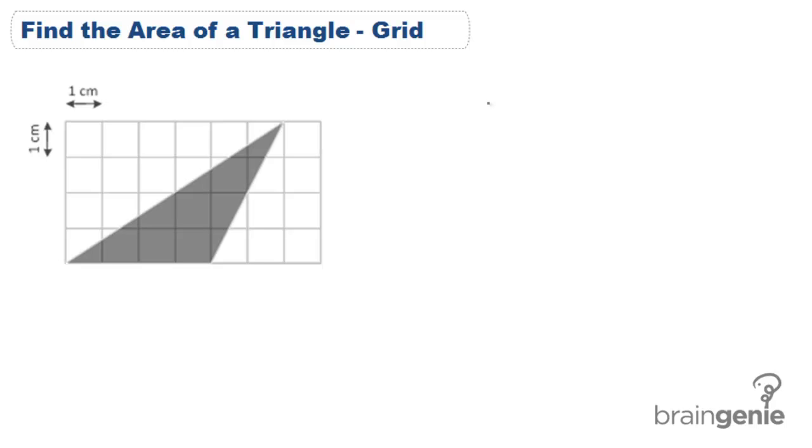Here we're given a grid and we need to find the area of our triangle. Let's first remember that area of a triangle is one half base times height. Because we're in a grid, it's relatively easy to find our base and our height.